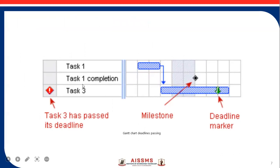A simple example of the Gantt chart is shown here. Task one is completed and it goes to task three; a milestone is achieved in between task three, but task three has missed its deadline. So it is necessary to identify the different milestones as well as the deadline for each activity, so we can visualize whether a particular activity is meeting its deadline or not.